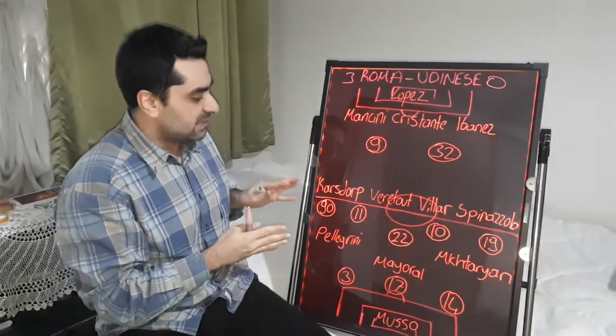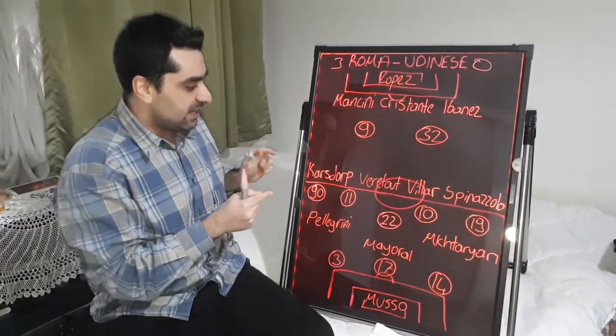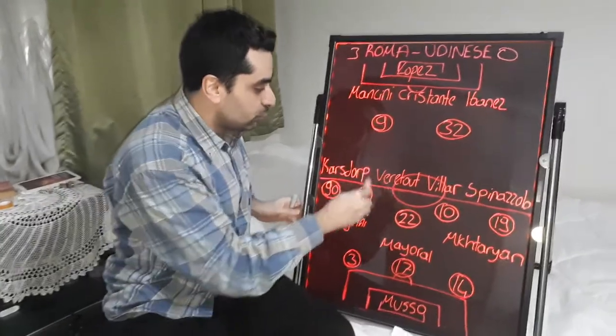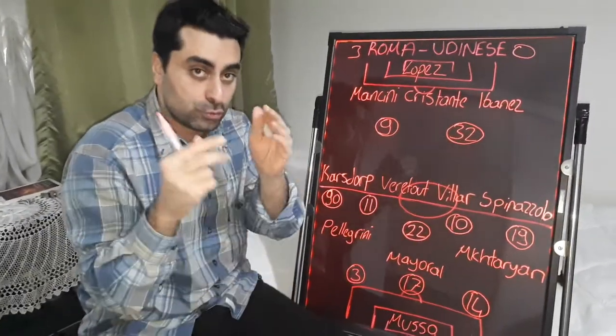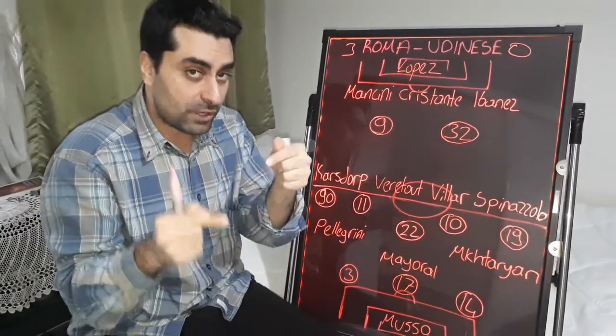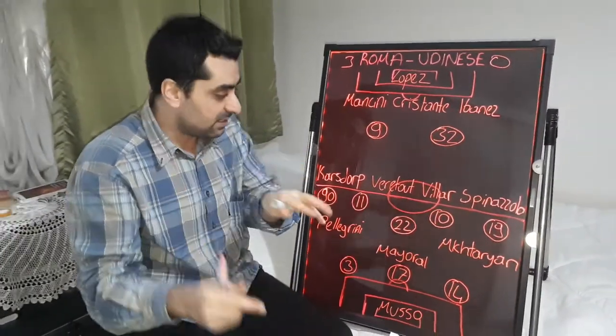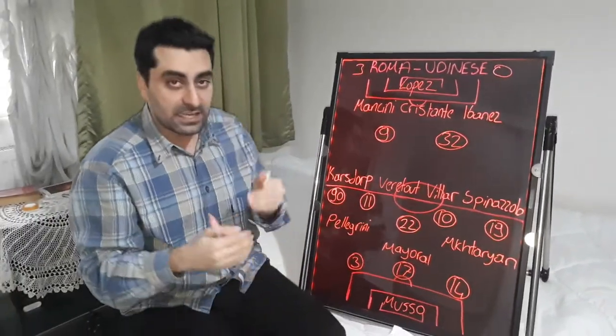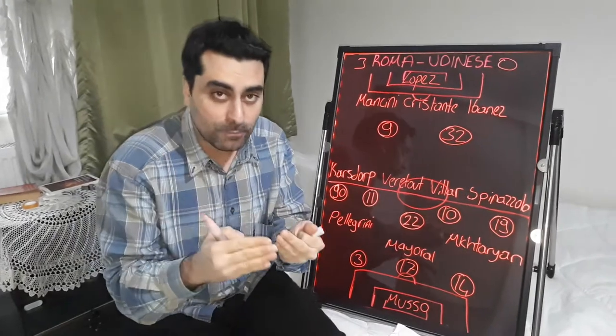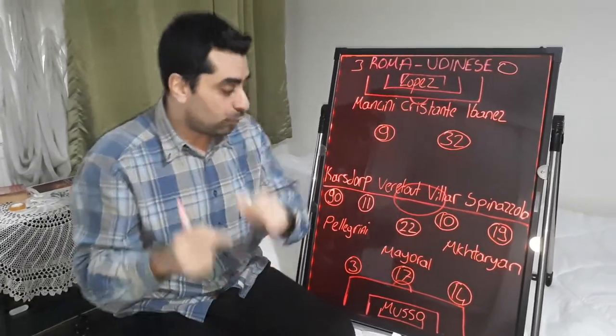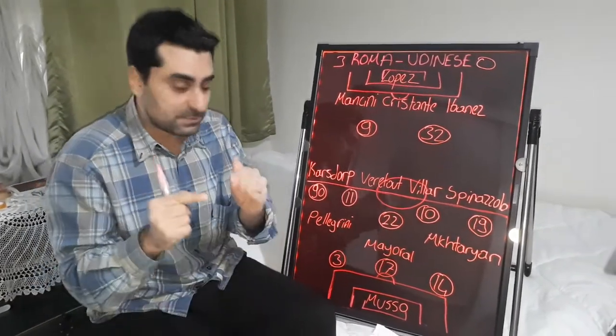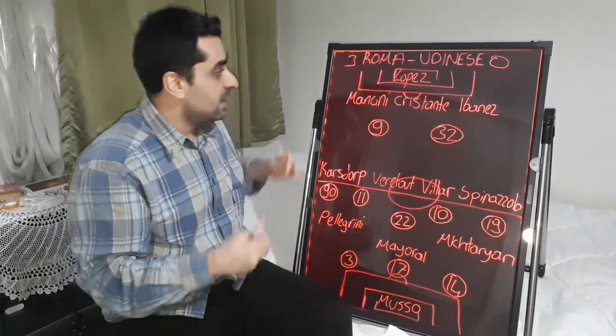Let's start with Roma's tactics. Werotut scored two goals, one of them from a penalty. And Pedro scored one goal in the last minutes of the game.